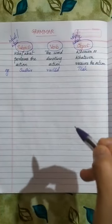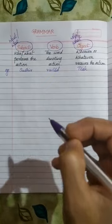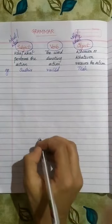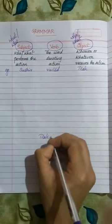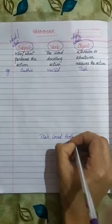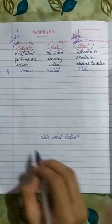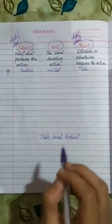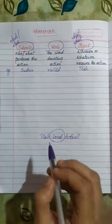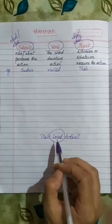I will give you another example: Tilak loved football. In this sentence, the verb is 'loved' — the word denoting an action. Loved is the verb.